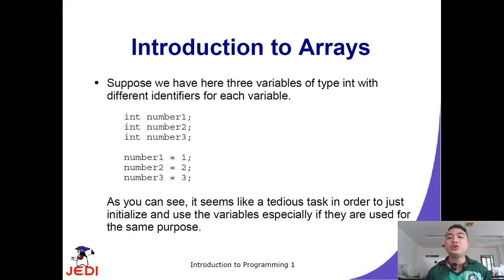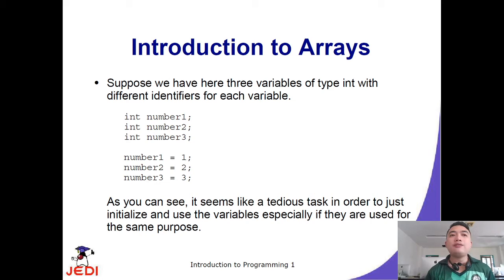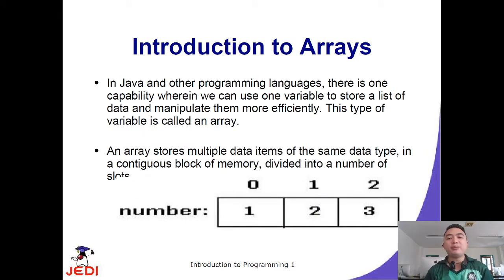Suppose you are required to declare 100 variables of type int, each with a different identifier. If you don't know about Java arrays, this will be a tedious task — declaring and initializing 100 integer type variables with identifiers like number1, number2, up to number100. These variables all have the same purpose, making it very cumbersome to manage them individually.